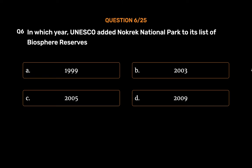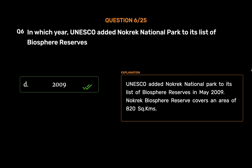The correct answer is Option D: 2009. UNESCO added Nokrek National Park to its list of biosphere reserves in May 2009. Nokrek Biosphere Reserve covers an area of 820 square kilometers.